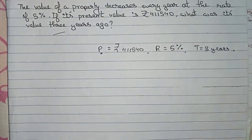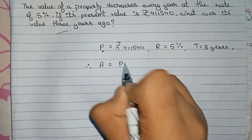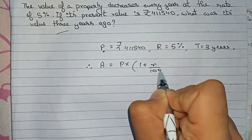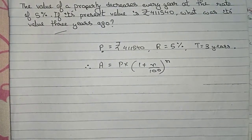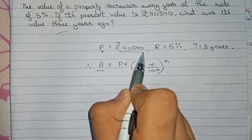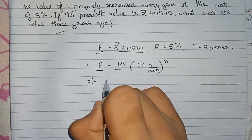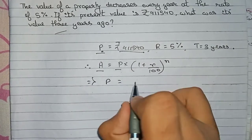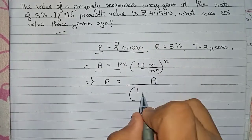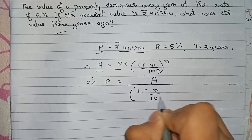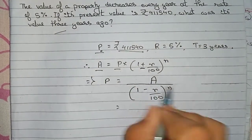For this question, first we write our formula. The formula is: Amount = Principal × (1 + r/100)^n. This is the standard formula. In this question, the amount is given as 411540 and we have to find the principal. So rearranging, Principal = Amount / (1 − r/100)^n.